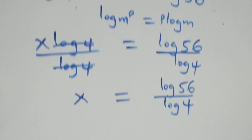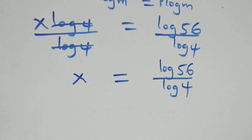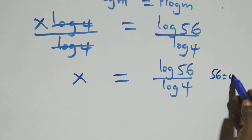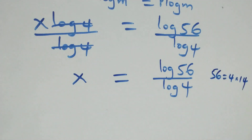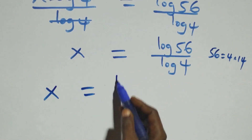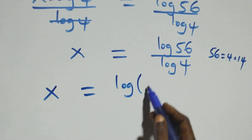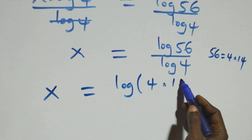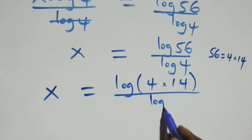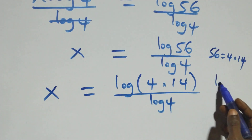Watch this video to the end, give a thumbs up, put your comments, and also share this video. Next step, we can express 56 as 4 times 14. So what we have becomes x equals log of 4 times 14, all over log 4. This follows the logarithm rule when we have log of a times b.